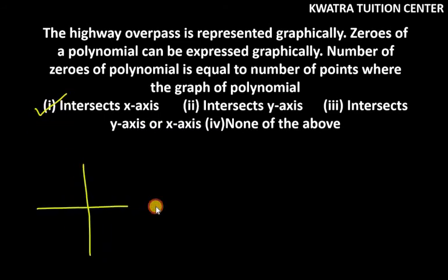I will revise you once. You have to read it in exercise 2.1. So this is our y-axis and this is our x-axis. So the structure shows how do you count this number of zeros. We count the number of zeros when it intersects x-axis on the graph. So the right option is the first part.